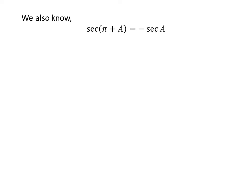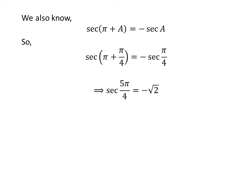We also know the trigonometric identity: secant of pi plus a is equal to minus secant of a. The proof of this identity is given in the video appearing in the upper right corner, and the link is also given in the description section. Applying this identity as before, we get secant of 5 times pi upon 4 is equal to minus square root of 2.